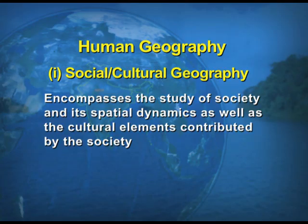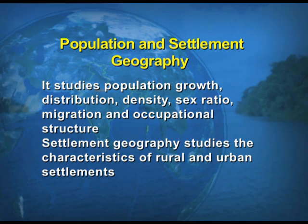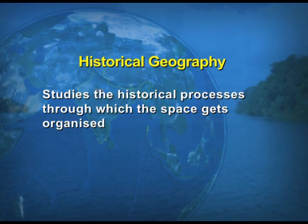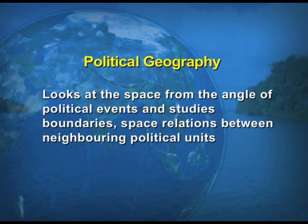In the principles and philosophy of geography, we study geographical thought, human ecology, and land-human relations. In human geography — the other facet of the systematic approach — we have social and cultural geography, population and settlements, economic geography, and historical and political geography. In population and settlements we talk about rural and urban geography, including aspects like migration.